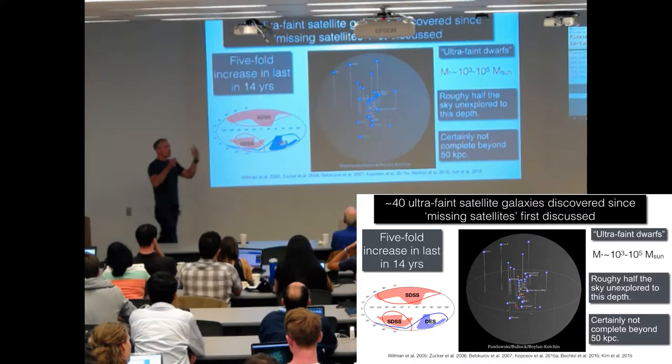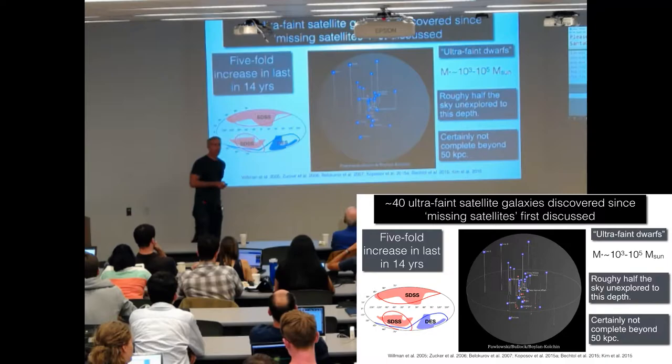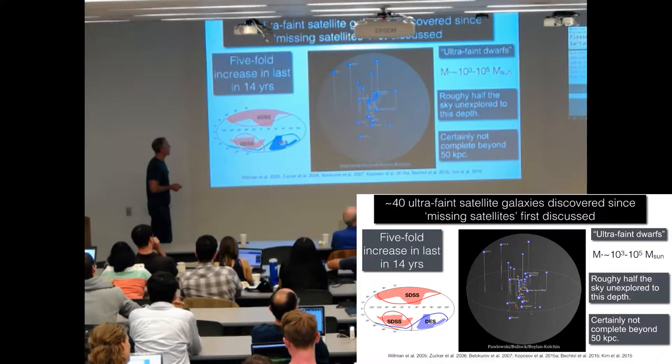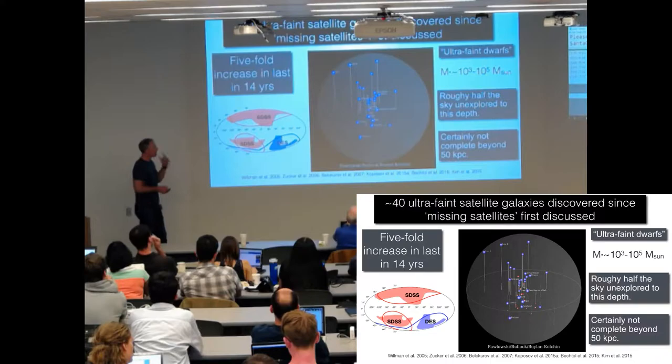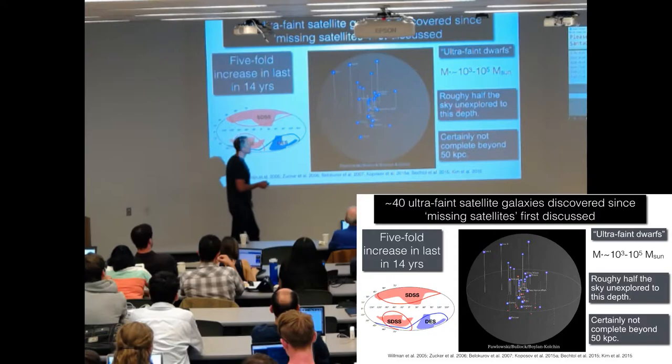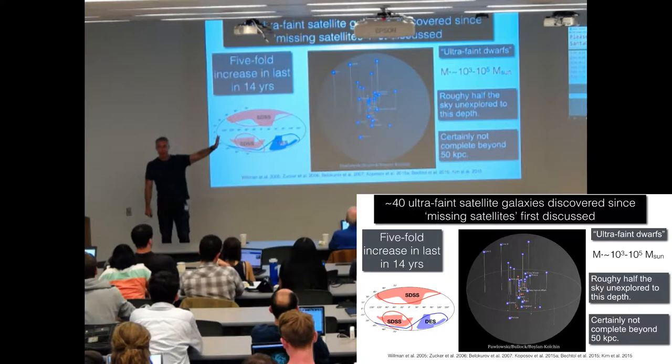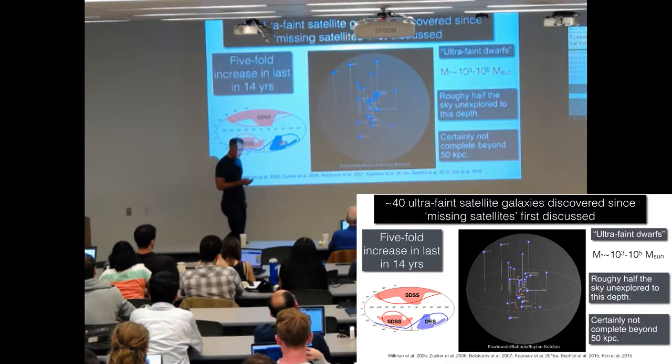The other thing that's happened since the missing satellites problem was first formulated was that we've discovered 40 new galaxies in the local group. So many of them were missing and a lot of them were found. It's a five-fold increase in our satellite inventory in the last 14 years. Something like of order a third of the sky has been covered by these surveys and so everybody expects there to be more. So something like half the sky is unexplored to the depth to find these really low mass ultrafaint galaxies. And as Coral showed, if you puff them up a little bit by like a factor of two, they would be there and you just couldn't see them because they'd have too low surface brightness. So there could just be all kinds of stuff out there that we haven't seen.